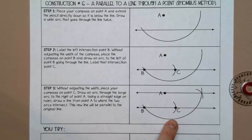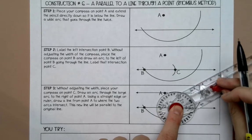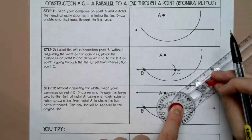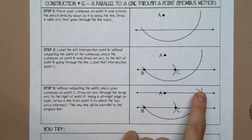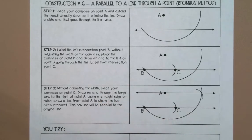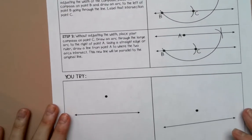Then label that C. Put your compass on C and draw another arc to the right of point A. That is how you connect your line. Let's try an actual example here.